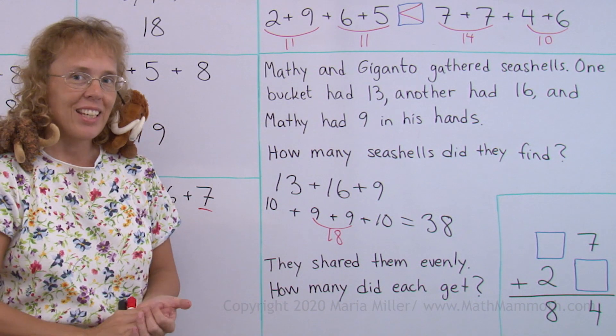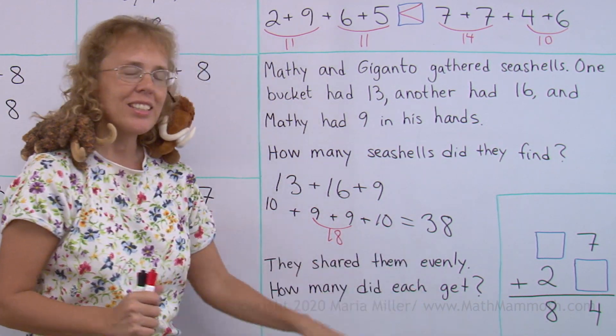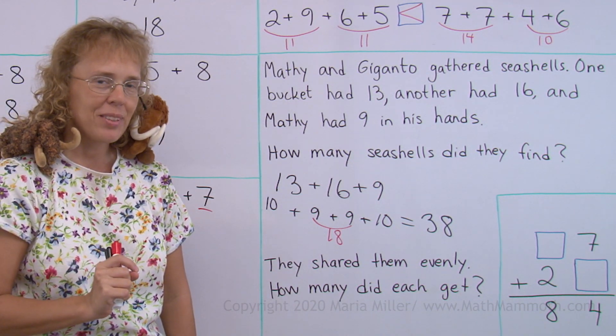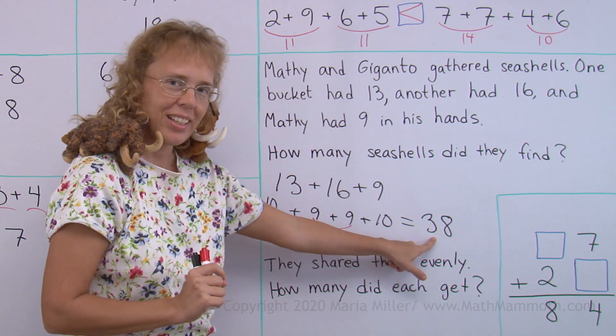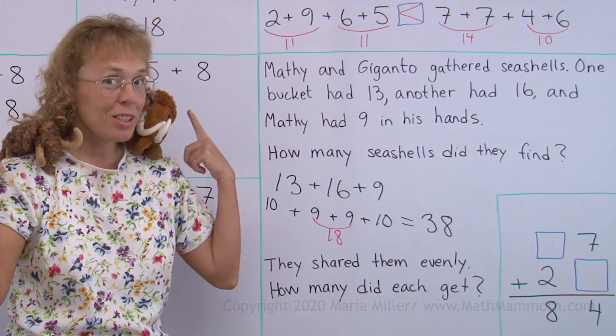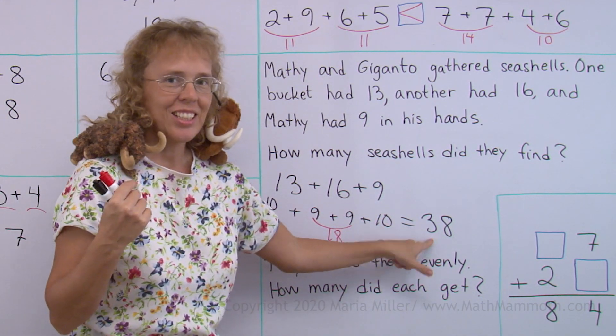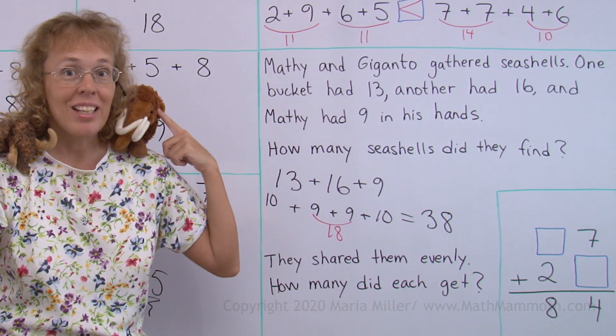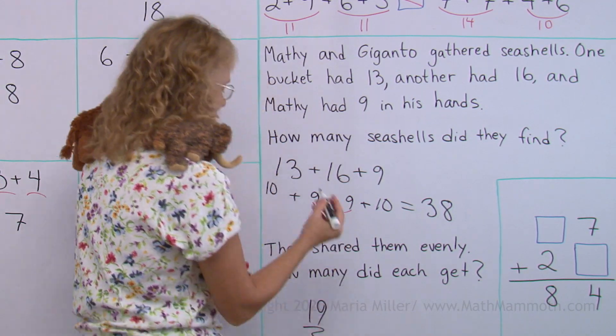20, of course. Right. So we have solved that problem. But this is 38. It's not 40. It's 2 less than 40. So if they shared these evenly, think. If it had been 40 seashells, each one would have gotten 20. But it's 2 seashells less. So each one of them gets 1 seashell less than 20, right? 1 less than 20 is 19.